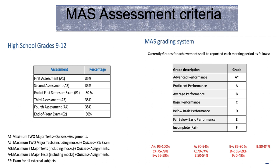As for the modern American system assessment criteria for high school students taking a scientific course, the first and second assessments are worth 35% of the overall grade, and the end of the semester exam is worth 30% of the overall grade. The third and fourth assessments are worth 35% of the overall grade, and finally, the end of the assessment exam is worth 30% of the overall grade.